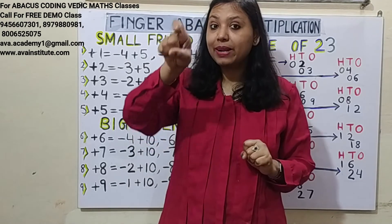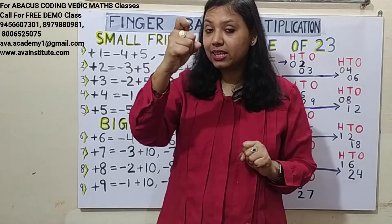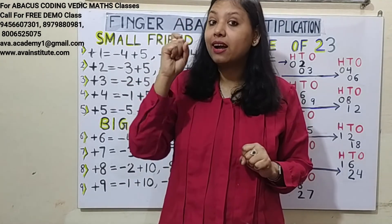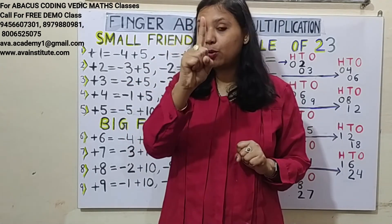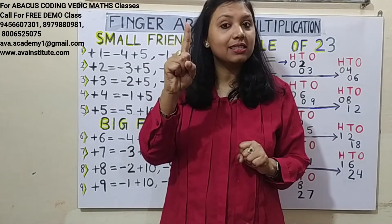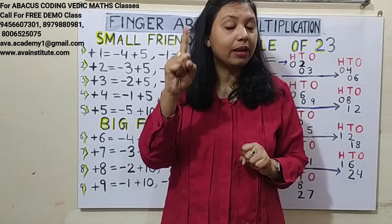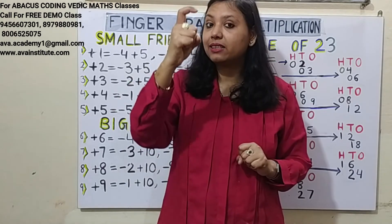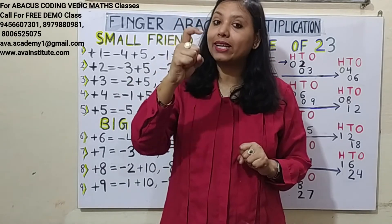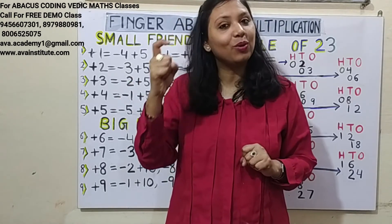Friends, if we bend the finger fully it represents only 100. If we open the finger it represents only 1. But if we bend it halfway, it represents both 1 and 100 simultaneously.